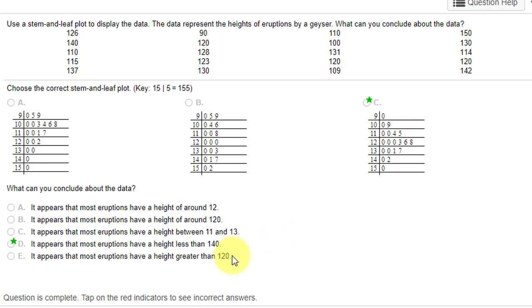So that's not most. That leaves: it appears that most eruptions have a height less than 140. At 140 there, there's three at 140 or greater, so that means there's seventeen less than 140. So that's the correct answer.